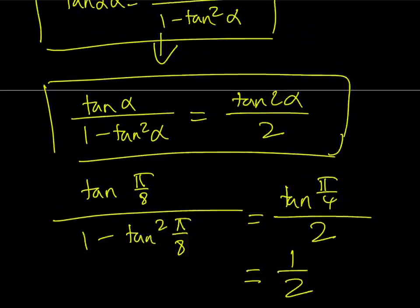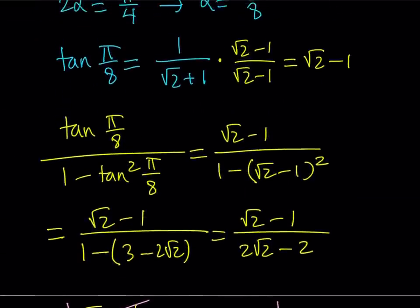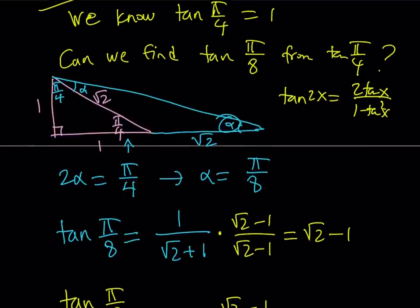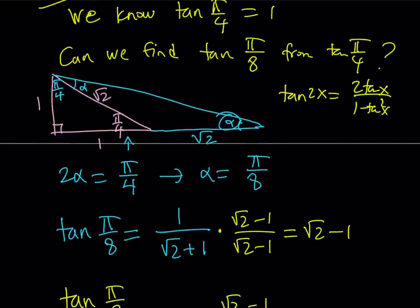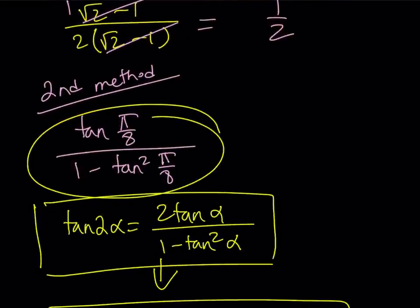That's pretty much it. But let's briefly talk about the 1b. What was 1b? 1b was basically, instead of drawing a right triangle, you could also use the tangent 2x formula and set it equal to 1. And then if you solve this equation and look at the positive solution, that's going to give you tangent pi over 8. And this brings us to the end of this video.